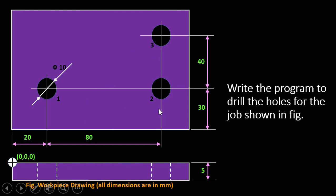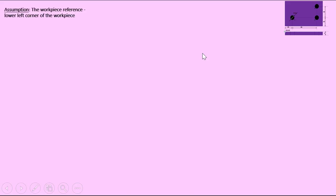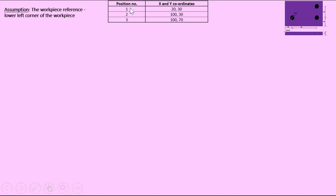Based on the location of the holes, I have prepared a coordinate table. The first hole has coordinates X20, Y30. The second hole is 100 mm in the X direction and 30 mm in the Y direction, so coordinates are X100, Y30. The third hole is 100 mm in X and 70 mm in Y, so coordinates are X100, Y70.